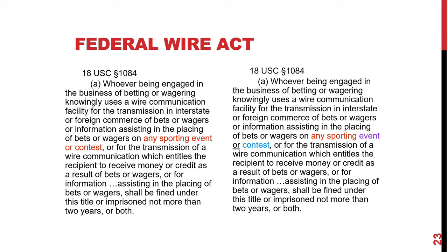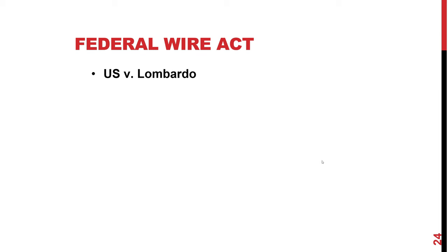No other circuit followed the Fifth Circuit, and there were no reported court opinions going that way, until a court opinion out of Utah in U.S. v. Lombardo. Lombardo was involved in providing financial services to online poker sites primarily and was charged with violating the Federal Wire Act. His attorneys filed a motion to dismiss all Wire Act charges because he was not involved in any sports wagering, relying on the Fifth Circuit's holding that sports wagering was a necessary underlying act prohibited by the Wire Act. The Utah court said, we're not in the Fifth Circuit, we're in Utah.